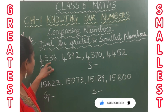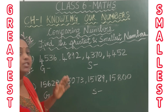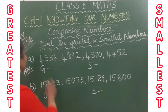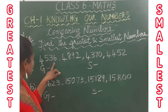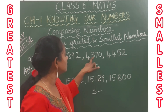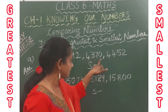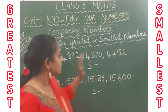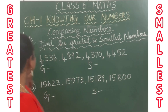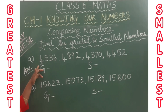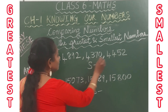First one: 4,536; 4,892; 4,370; 4,452. We are going to find which is greatest and which is smallest number. First we are going to start with 4 — that is the thousands place. All numbers start with 4, so we proceed with the next digit.